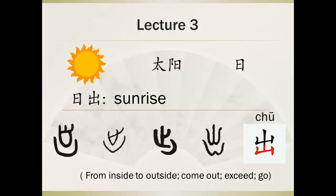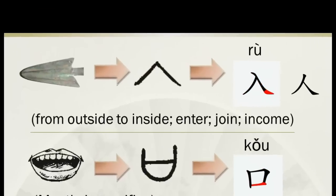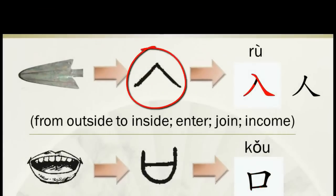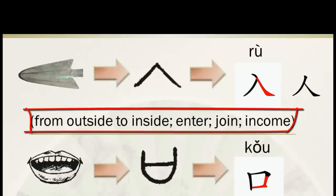How about from outside to inside? Look at this jiaguwen form — it has a similar shape to a bronze arrow. They actually represented arrows or sharp weapons penetrating into the body. So it has the meaning of from outside to inside, or: enter, join, income.